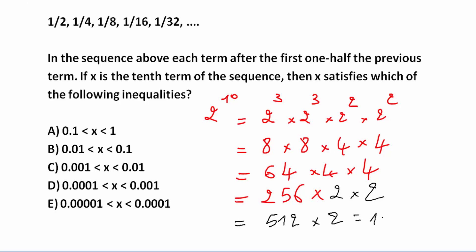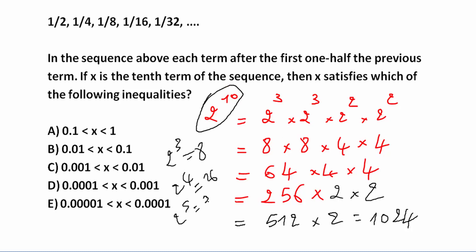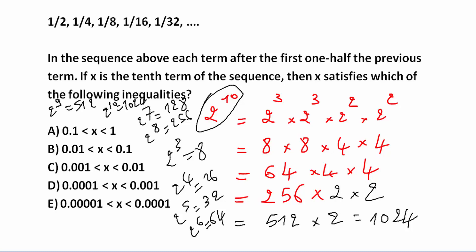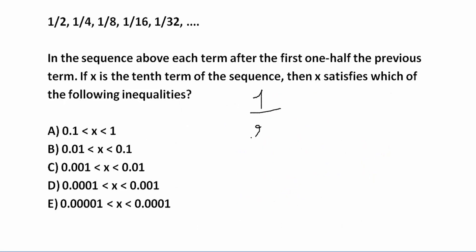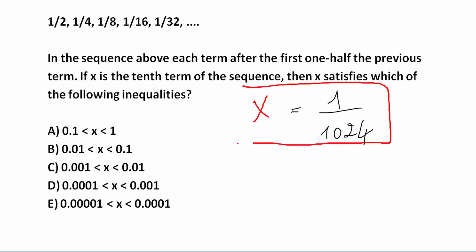If you want to be very powerful in the GMAT, you need to learn these by heart: 2^3 = 8, 2^4 = 16, 2^5 = 32, 2^6 = 64, 2^7 = 128, 2^8 = 256, 2^9 = 512, and 2^10 = 1024. So x equals 1 divided by 1024.